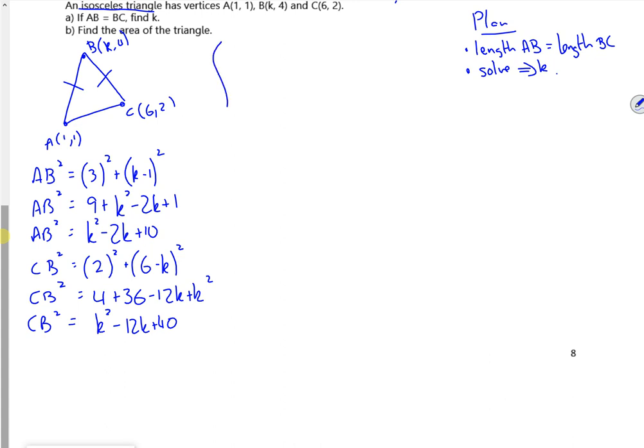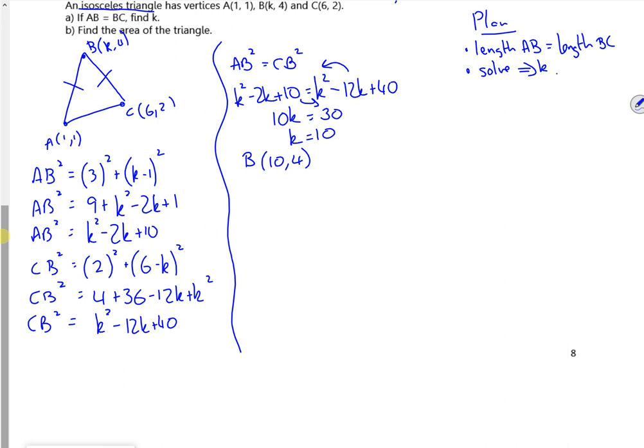So if they're the same, if the lengths are the same, then AB squared is going to be the same as CB squared. So K squared minus 2K plus 10 is the same as K squared minus 12K plus 40. K squared disappears. If I take the 12K over, I've got 10K. If I take the 10 over, I've got 30. So that tells me then that K is 3. So if K is 3, the coordinates of B are 3 comma 4. So that's part A done.